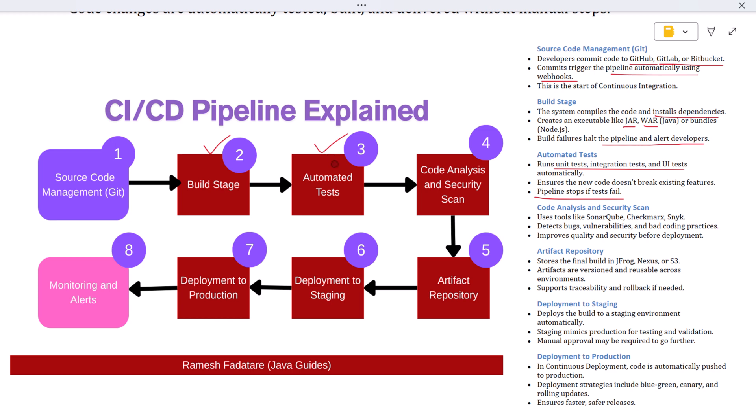Some pipelines also include static code analysis and security scanning. These tools analyze the source code to catch bugs, vulnerabilities, or bad practices even before the application is deployed. Tools like SonarQube, Checkmarx, or Snyk can flag security issues, outdated libraries, or violations of coding standards.